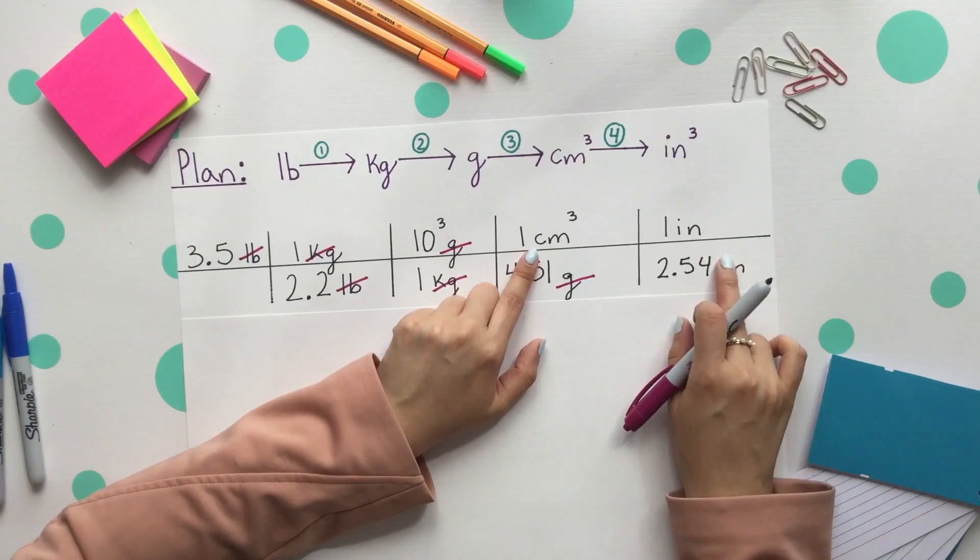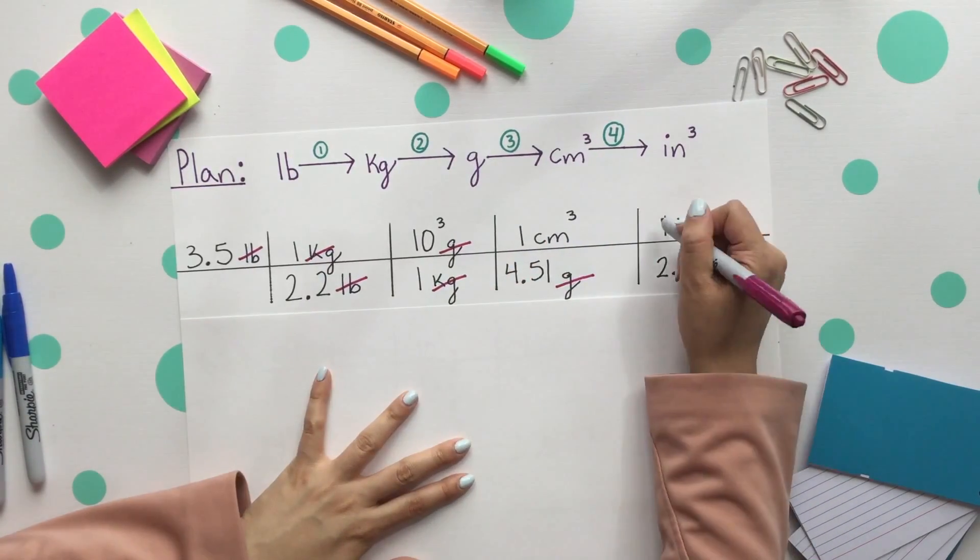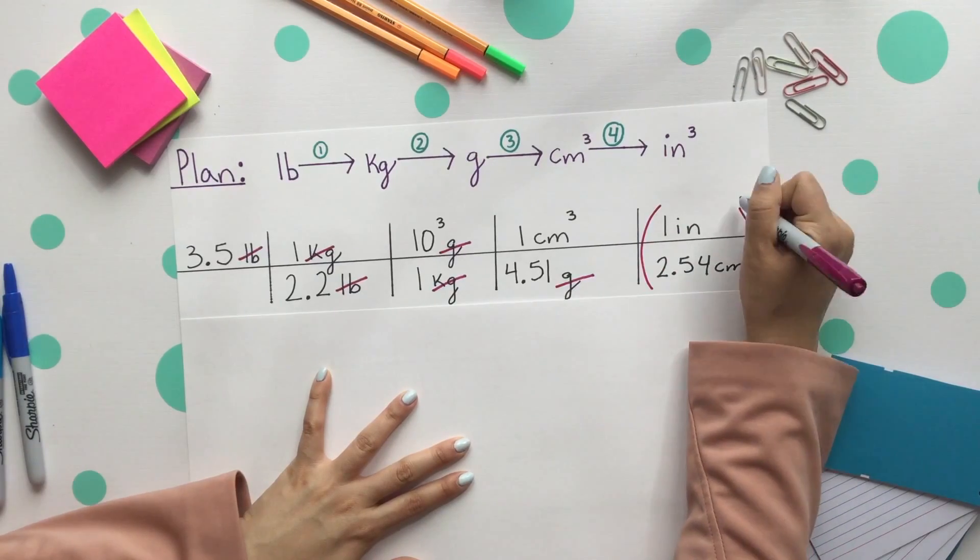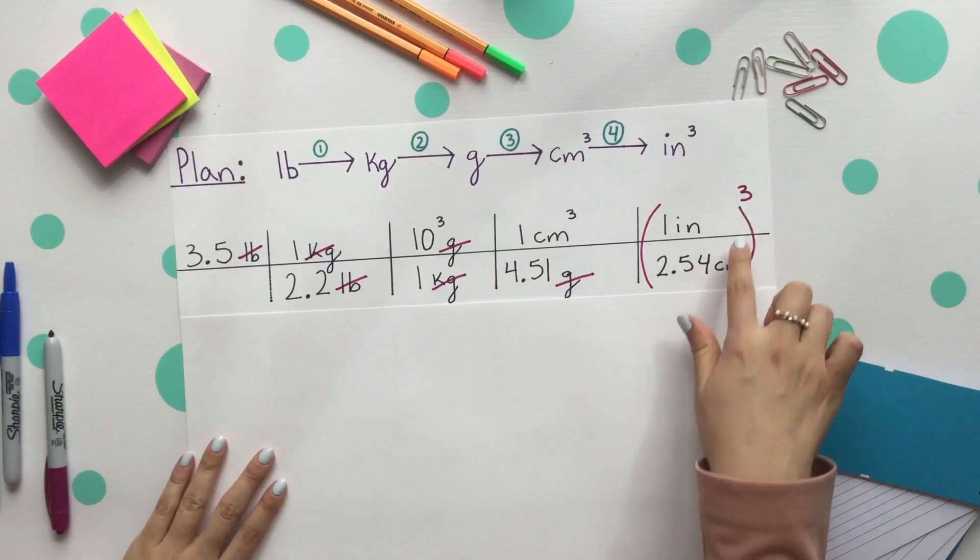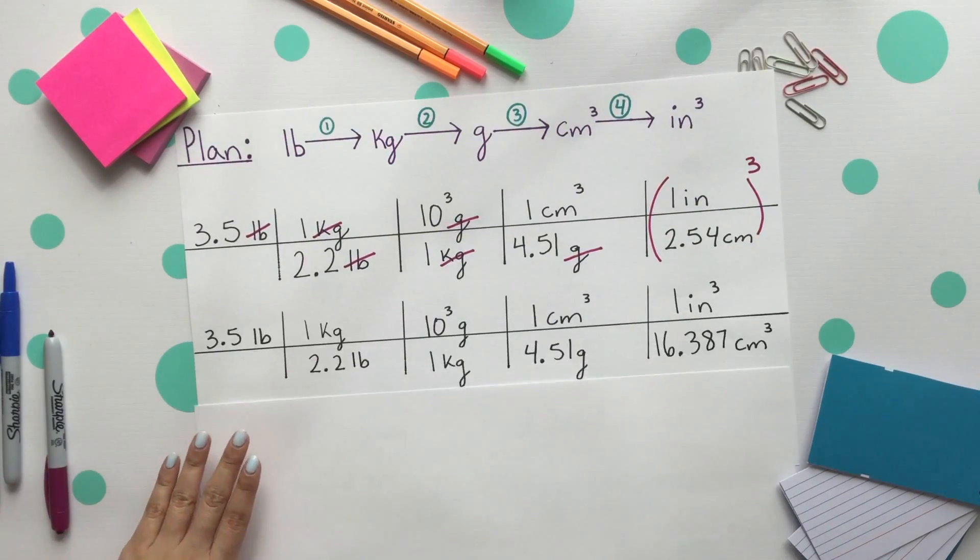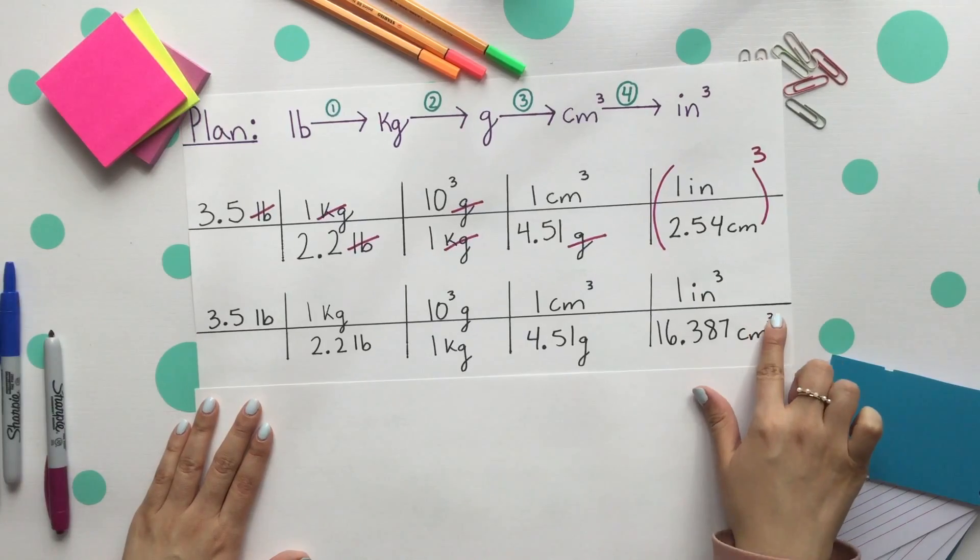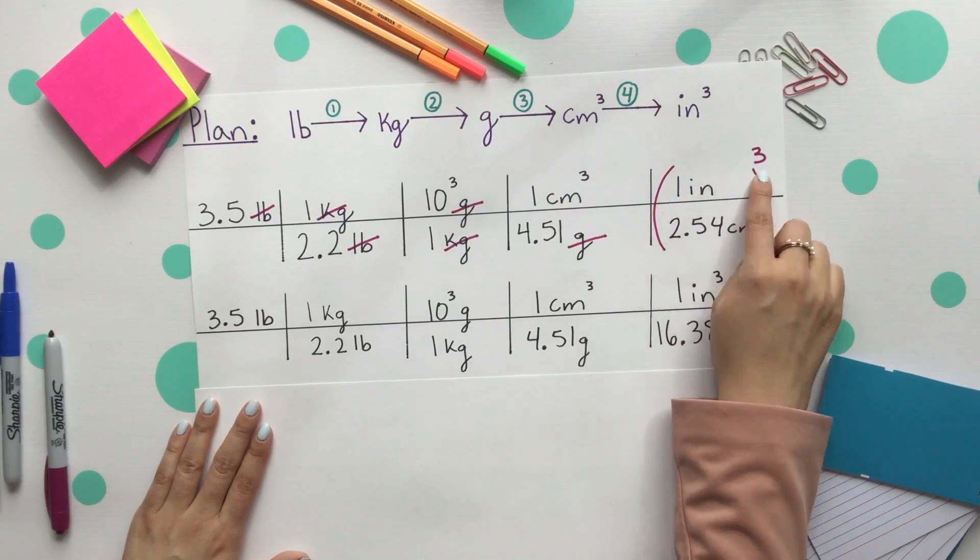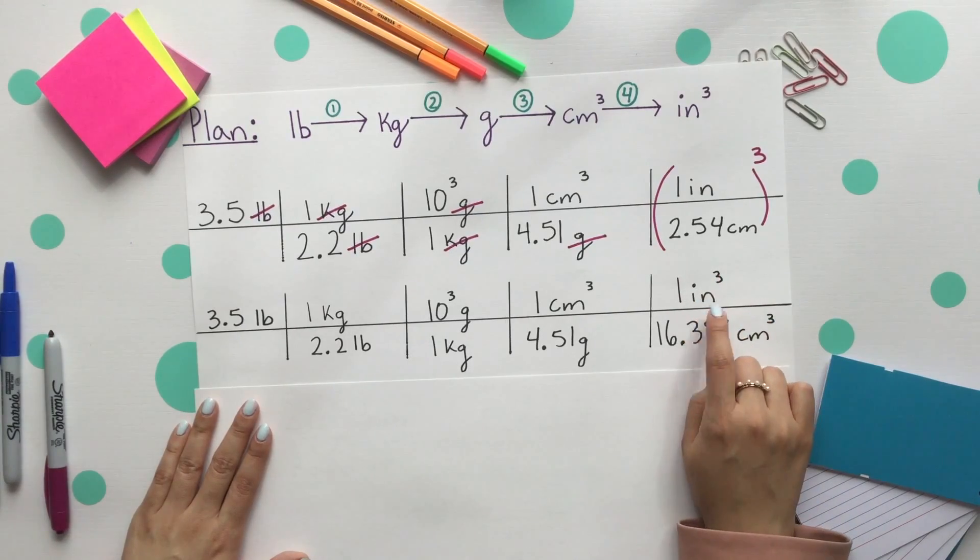But we see that this is not cubed, so we cannot cancel these two out. This entire conversion factor then has to be cubed. Once we do this, we will cube that 2.54 and we'll get centimeters cubed as well. And one cubed is actually just one, but our inches cubed will now be there as well.